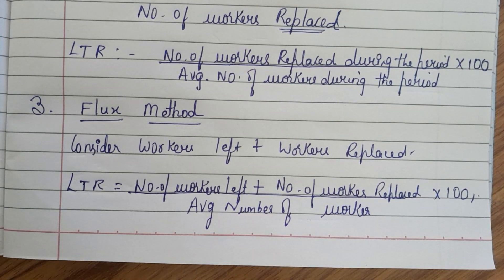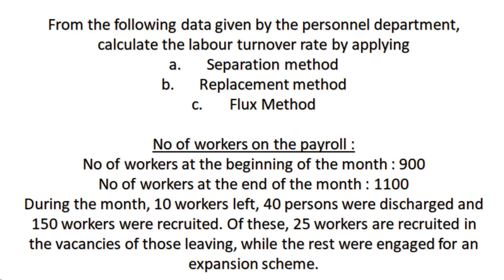Now let us solve a question. From the following data given by the personal (HR) department, calculate the labor turnover rate by applying separation method, replacement method, and flux method. Number of workers at the beginning of the month was 900, at the end of the month was 1100. During the month, 10 workers left, 40 persons were discharged, and 150 workers were recruited. Of these, 25 workers were recruited in the vacancies of those who left, while the rest were engaged for the expansion scheme.